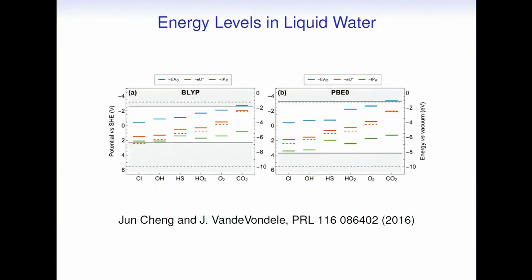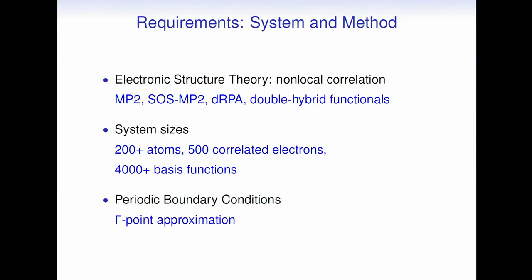Another thing: energy levels in liquid water. We all know the band gap of water is only described correctly with hybrid functionals, and this also affects the energy levels of ions in water. So to do this type of simulation, we want electronic structure calculations using non-local correlation, because that includes the van der Waals correction, and we hope to have van der Waals and hydrogen bonding treated on the same level. This should add to better accuracy.